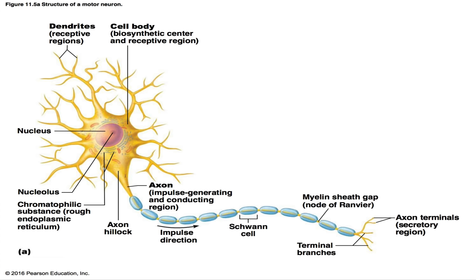Looking at a typical neuron image: the dendrites are the branching extensions that receive incoming signals, the axon is the long tail-like extension that carries signals away, and the cell body contains the mitochondria, rough ER, and ribosomes. The Nissl body is the high aggregation of rough ER and free ribosomes. An action potential entering through the dendrites travels through the cell body and exits through the axon.